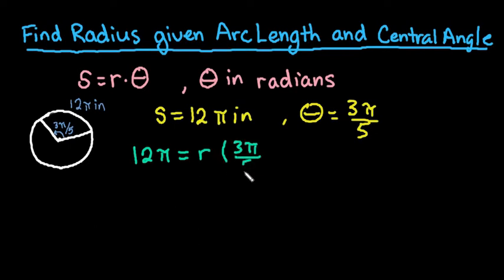And one of the reasons I went ahead and just wrote it this way instead of dividing is because sometimes it's easier to divide fractions when it's written this way. Because we can see that in order to cancel this out we would multiply by the reciprocal. So the reciprocal would be 5 over 3 pi.